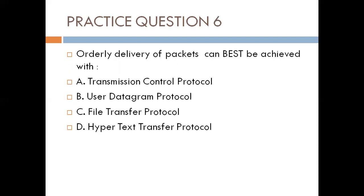Question six. Orderly delivery of packets can best be achieved with: A. Transmission Control Protocol, B. User Datagram Protocol, C. File Transfer Protocol, D. Hypertext Transfer Protocol. This is testing knowledge of OSI layers and their protocols. TCP ensures orderly transmission of packets and operates at the transport layer. UDP is also a transport layer protocol but does not ensure orderly delivery because it has no acknowledgment check. File Transfer Protocol is used for downloads. HTTP is the protocol of the internet. So the best answer is A — TCP is used to ensure orderly delivery of packets.